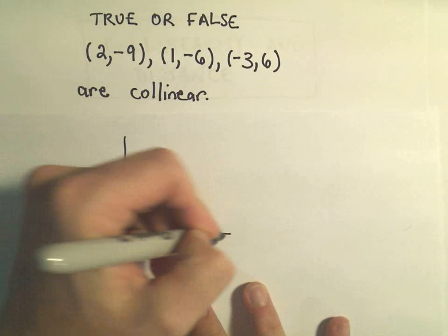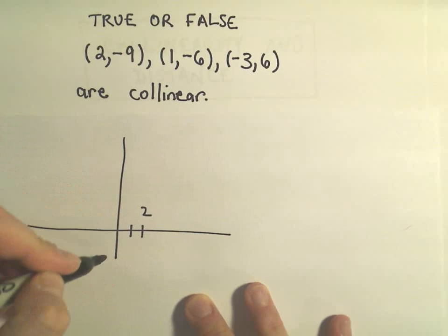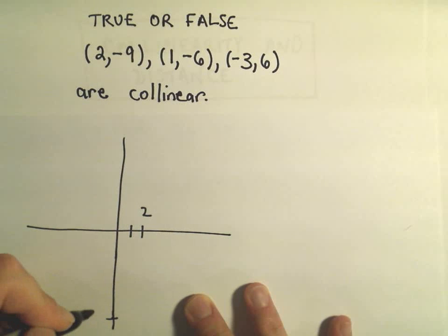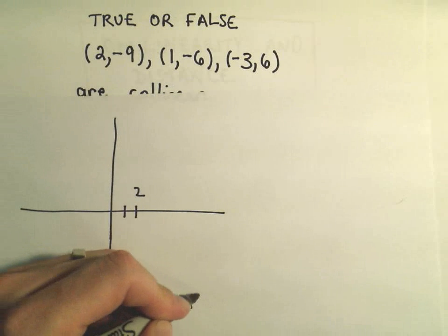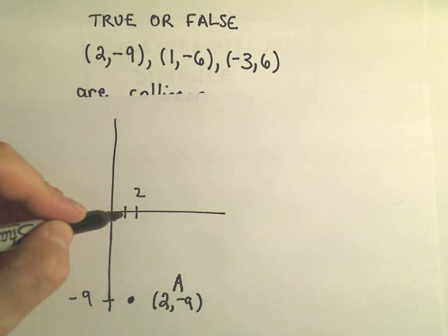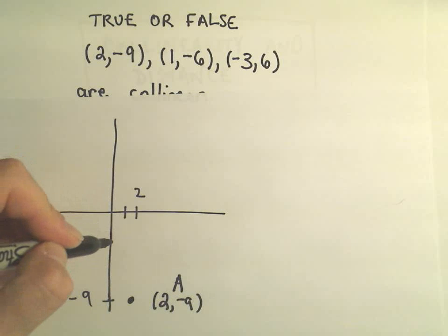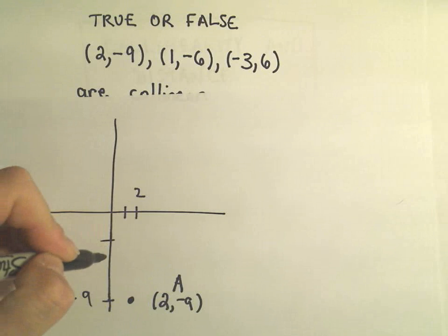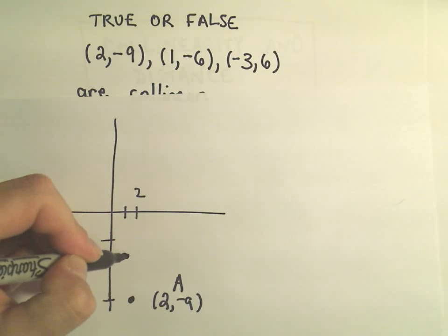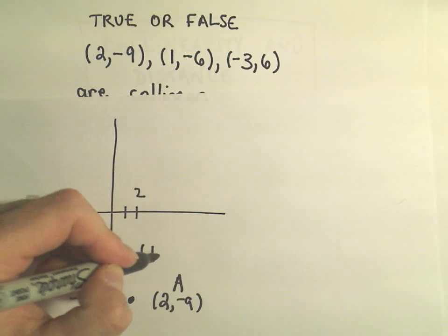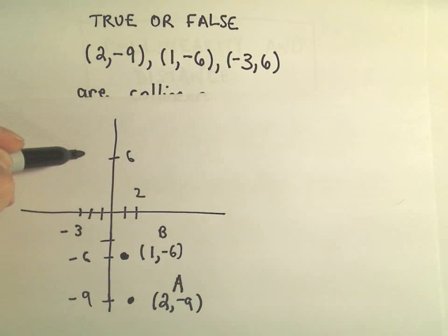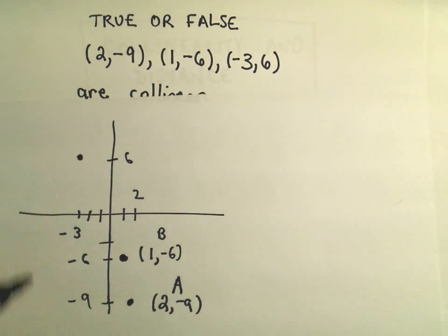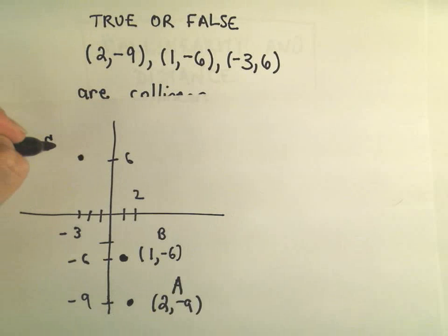Let's see, maybe I'll graph them here real quick. So here's positive 2 and maybe negative 9 is way down here. So maybe the point (2,-9), we'll label that as our point A. We've got positive 1 comma negative 6. So there's (1,-6) and our point B. And then we have the point (-3,6), but that's way up there at 6. So maybe we'll call this our point C.